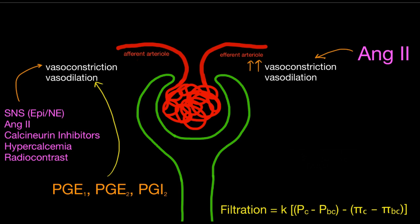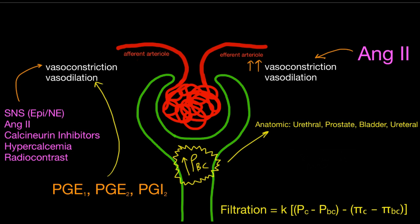A final cause to cover is obstruction. If the pressure in Bowman's space — PBC in Bowman's capsule — is extraordinarily elevated, filtration is opposed. This can happen with obstruction, which is the post-renal mechanism underlying acute kidney injury. Causes include urethral problems, prostatic obstruction, bladder outlet obstruction, ureteral blockage — either intrinsic or extrinsic compression — going from the outside in.